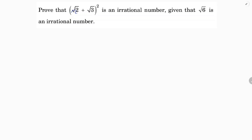We need to prove that (√2 + √3)² is an irrational number, given that √6 is irrational. This question is from the CVSE 2024 standard paper. First, we need to simplify the expression (√2 + √3)².